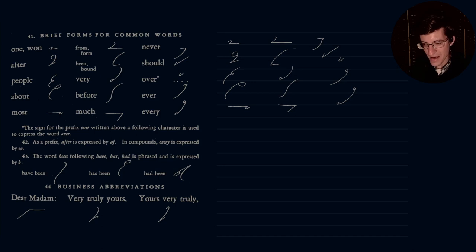The word been followed by have, has, had is phrased and is expressed by B. So if we have have been, it's VB. Has been. Had been. And there we go.